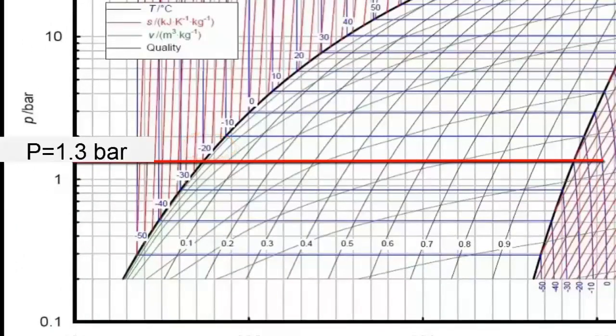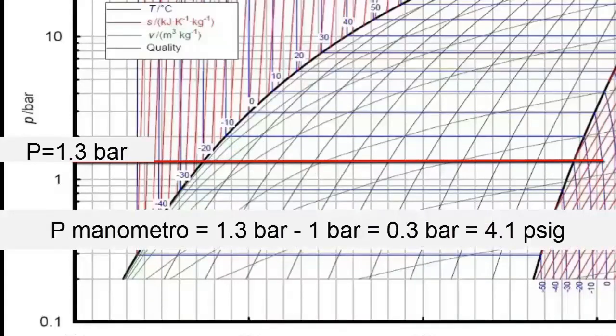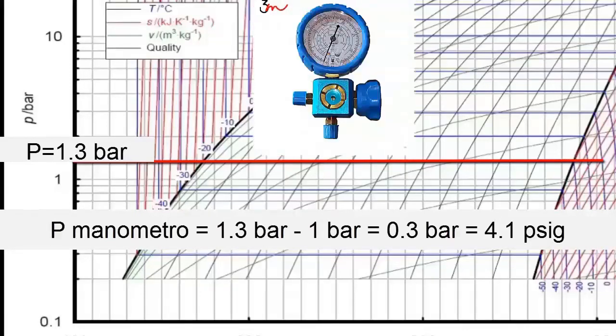To find the pressure that the manometer should read, we must subtract the atmospheric pressure from the absolute pressure of the diagram. By subtracting 1.3 bars minus 1 bar from the atmospheric pressure, we have a manometer pressure of 0.3 bars. The blue or low pressure gauge should read 0.3 bars or the equivalent of 4.1 psi.